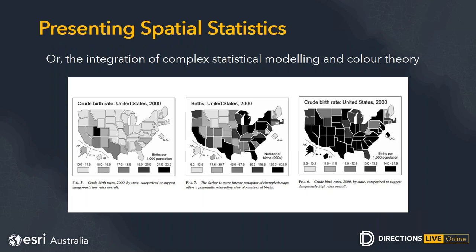Presenting spatial statistics is another huge topic in itself. I strongly recommend the reference material 'How to Lie with Maps' by Mark Monmonier — a great example of the same dataset, crude birth rate in the United States in the year 2000, represented three different ways through symbology to give a completely different view to the end user. It's really important to understand that your final product and the effort you put into it is just as important as the effort you put into the statistical process. Too often people get zoned in on the spatial statistics and don't consider how they'll present it. You also might be familiar with 'How to Lie with Statistics' by Darrell Huff — another classic on handling statistics for your audience.